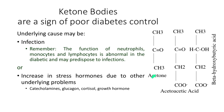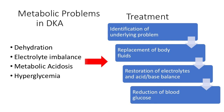The three basic ketone bodies are acetone, acetoacetic acid, and beta-hydroxybutyric acid. We'll talk about measuring those a little bit later. The main metabolic problems in DKA are dehydration, electrolyte imbalance, metabolic acidosis, and hyperglycemia.